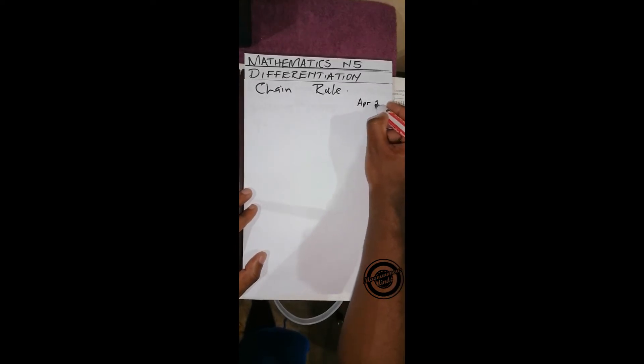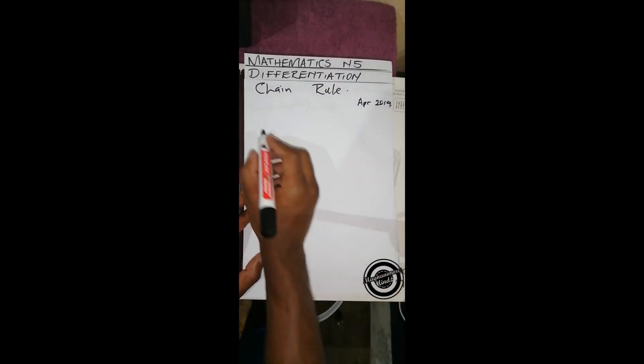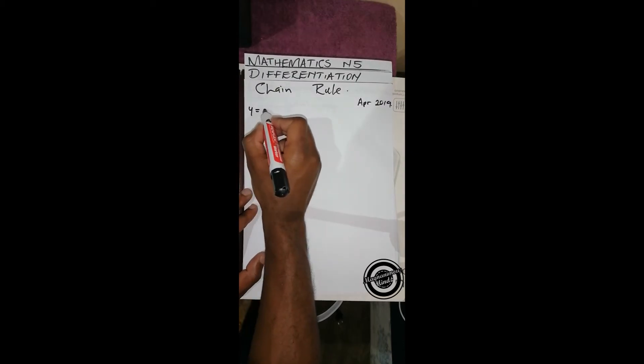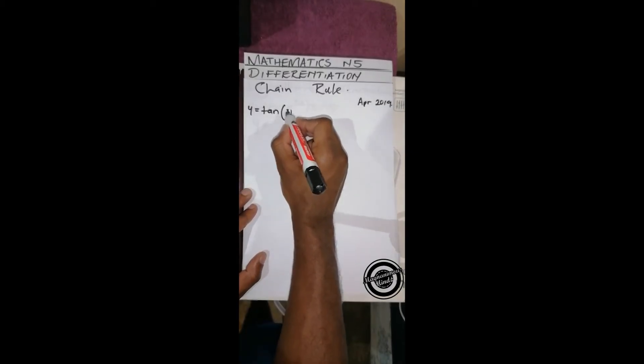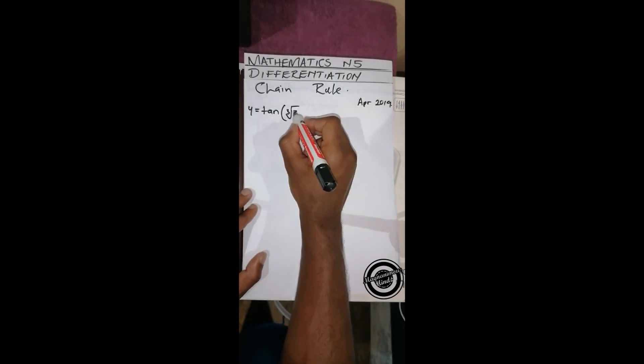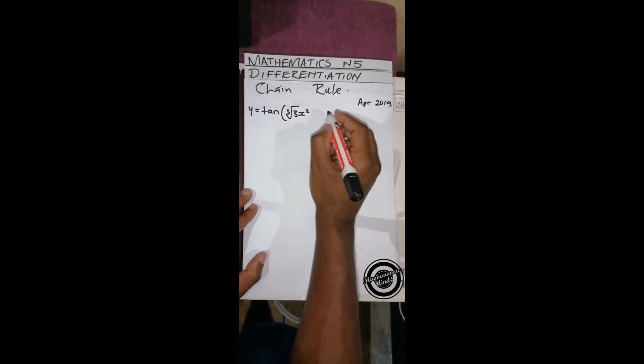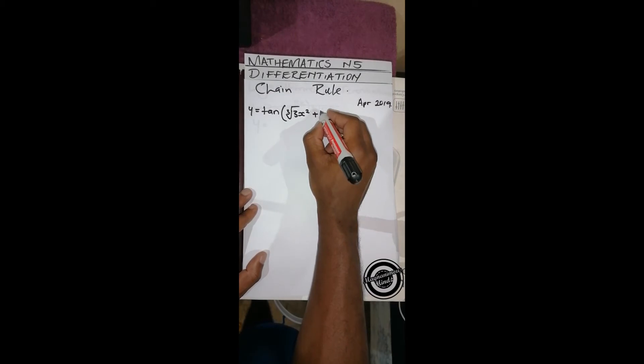The question was: y equals tan of the cube root of 3x squared plus ln of 5x to the power 4. We're told to differentiate this.